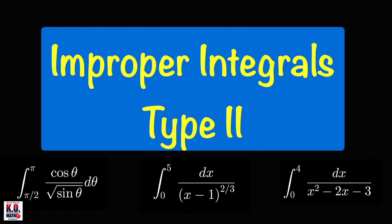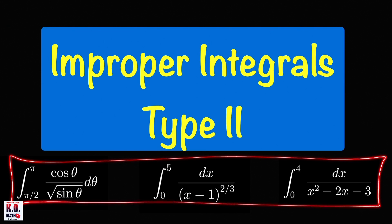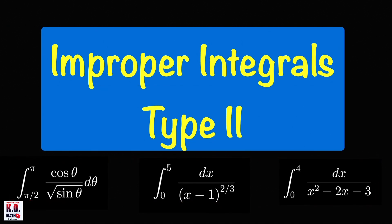Hello, everyone. In this video, we're going to discuss how to evaluate Type 2 improper integrals. These are integrals over a finite interval where the integrand is discontinuous on the closed interval a, b. These three integrals here are examples of this type of improper integral. But before we evaluate them, let's recall the three cases of Type 2 improper integrals.